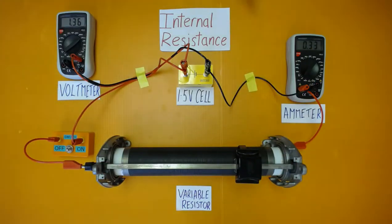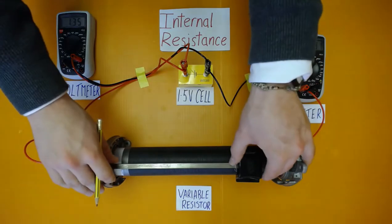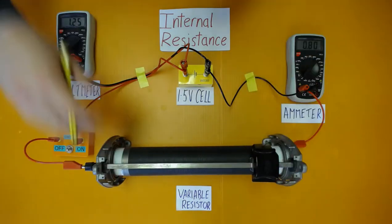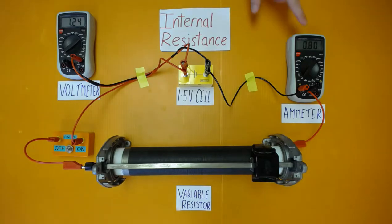This time our current is 0.33 amps and our terminal potential difference is 1.41 volts. Decreasing again, we have a current at 0.8 amps and our terminal potential difference of 1.41 volts.